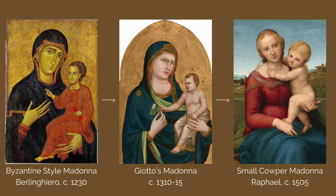Firstly, we can see that Giotto is attempting to create the holy figures' bodies as three-dimensional. The slight turn to the Virgin's body makes it appear as if she's turning to talk to the viewer.